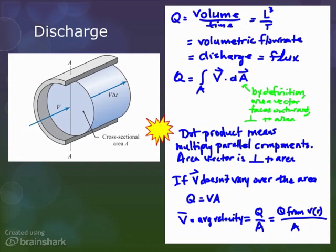Next point, if V doesn't vary over the area, Q is given by this nice, simple equation that Q equals V times A. And, by the way, dividing Q by A is one way to get the average velocity. More about that later.